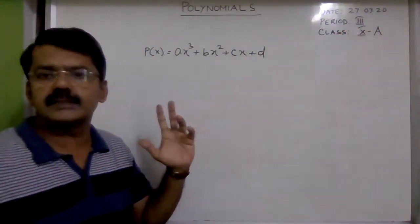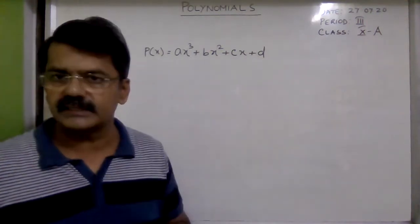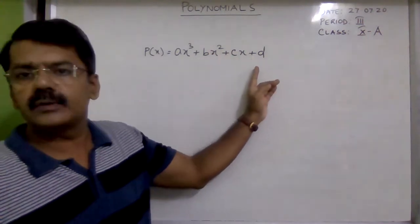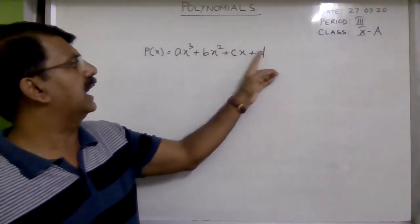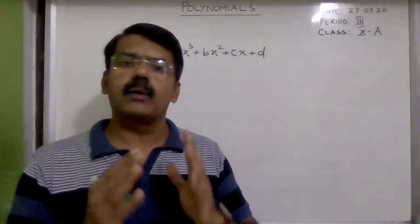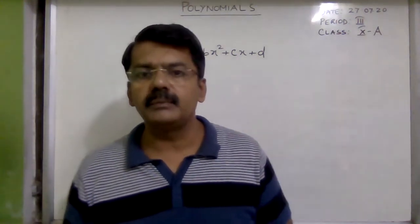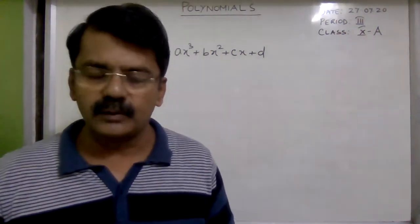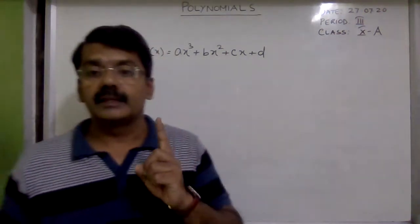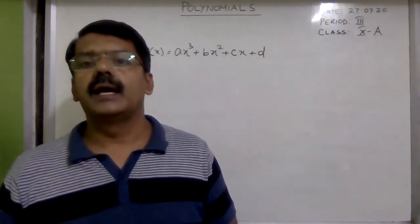In this polynomial, the unknown is x because a, b, c, d are constants — the unknown is x. The powers of the unknown in different terms are 3, 2, 1, and 0 (where there is no x). So the powers are whole numbers. Always remember: in a polynomial, the powers of the unknown should be whole numbers.